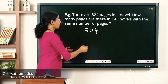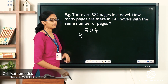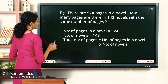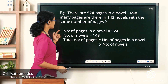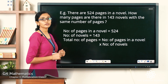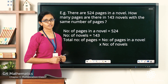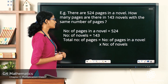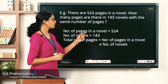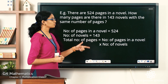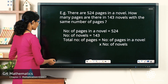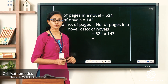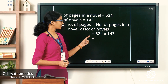To solve this, you have to multiply the number of pages in one novel by the total number of novels. Let us write the steps from the data given in the question. The number of pages in a novel is 524, the number of novels is 143, and the total number of pages equals the number of pages in a novel multiplied by the number of novels. Substituting the data, it will be 524 × 143.